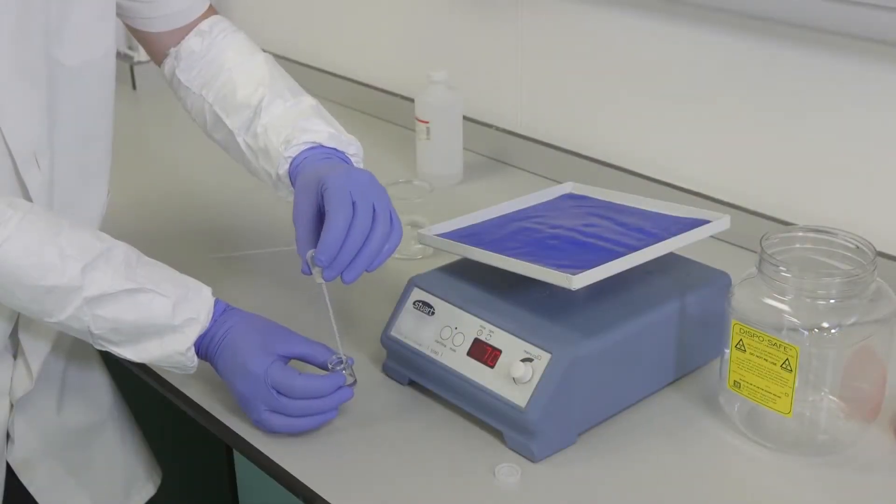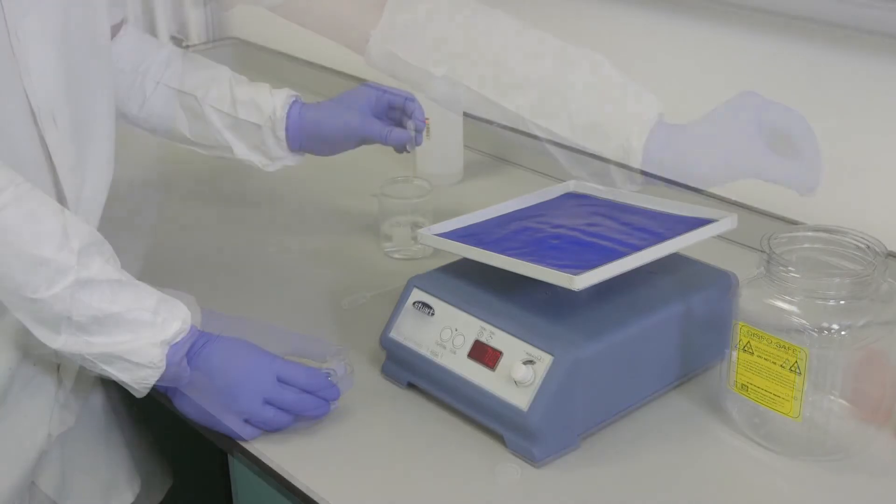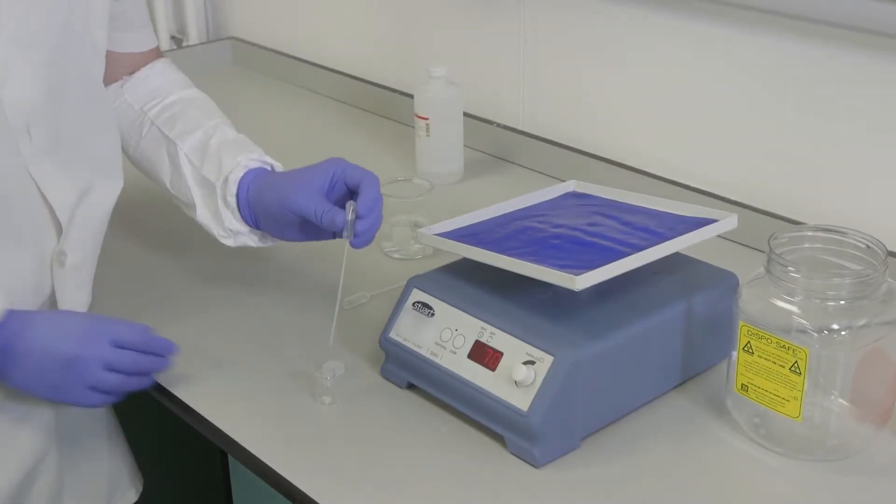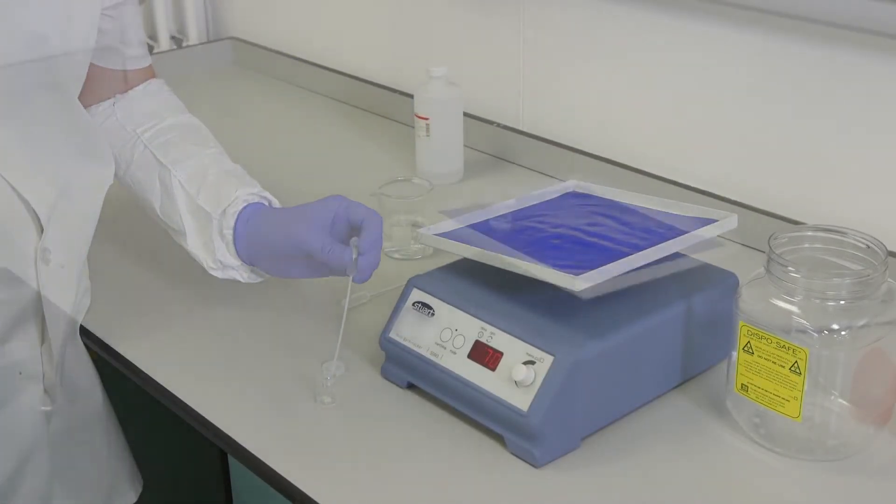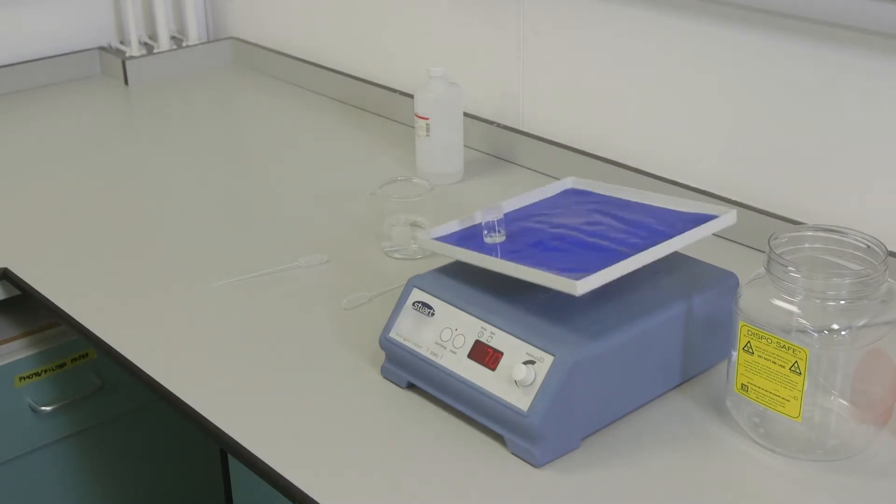Carefully remove the primary antibody solution. Wash it with the 1% Tris Triton solution for 10 minutes with agitation. Repeat this step 2 more times until you have performed 3 washes.